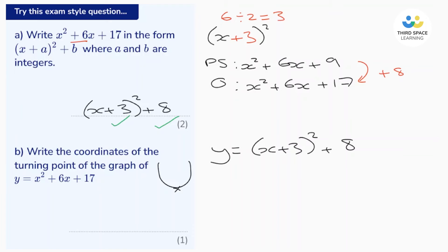Well, to get y as small as it can be we're going to need this bracket to be as small as it can be. And the smallest thing that this bracket can be is 0, because when we square anything we can't get a negative answer. So this bracket at its lowest point must be 0.